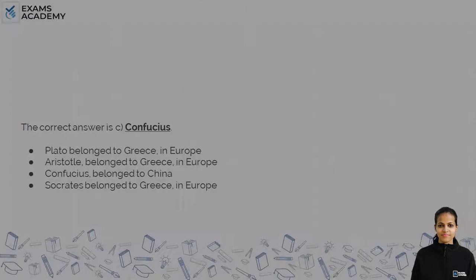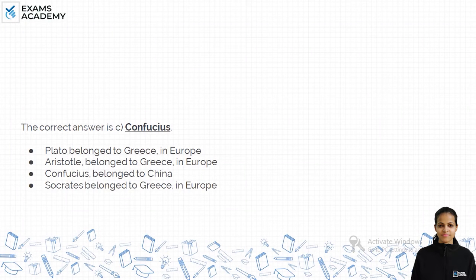And the correct answer is option C, Confucius. Plato belongs to Greece, which is a place in Europe. Aristotle also belonged to Greece in Europe. Aristotle was Plato's student, so they were both from more or less the same place.